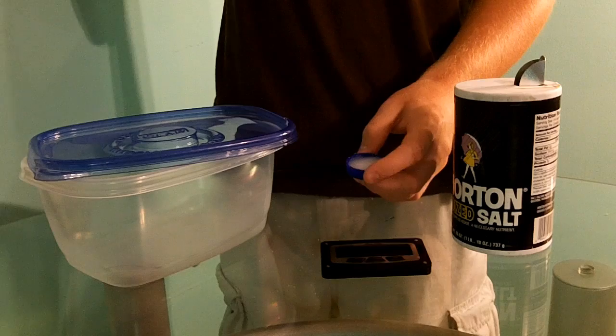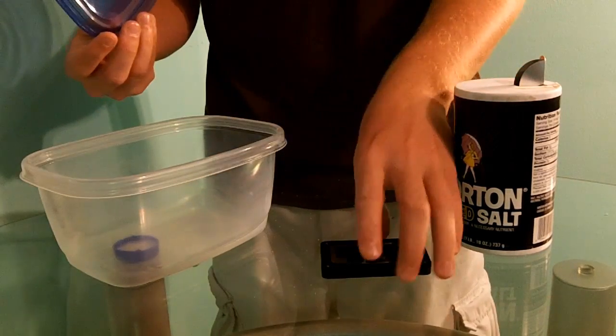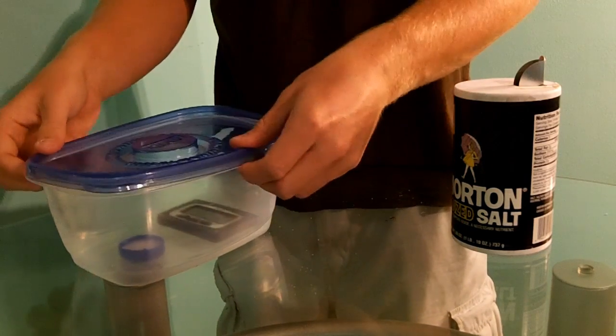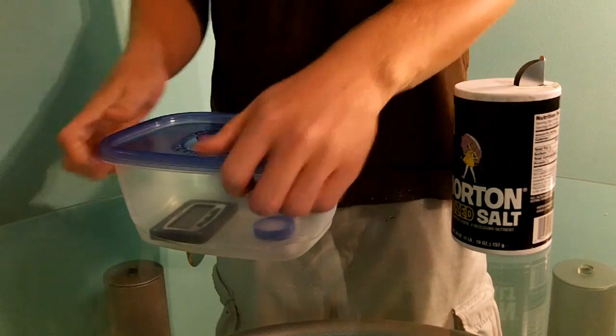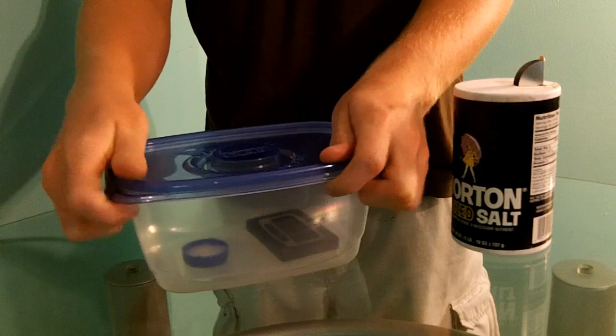Next, we're going to grab the cap, put it in our Tupperware, grab our hygrometer, we're going to put that in there as well. Seal the top. Make sure the seal is pretty tight because we don't want any air going back and forth. And then we'll be back in about 18 to 24 hours.